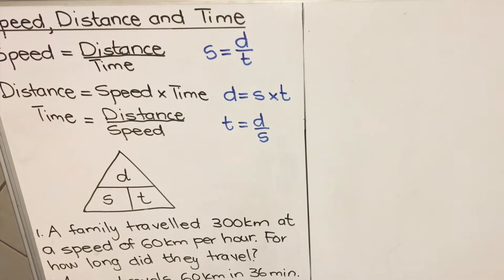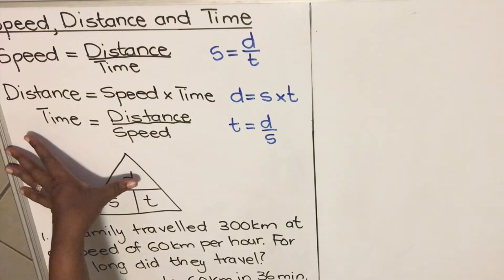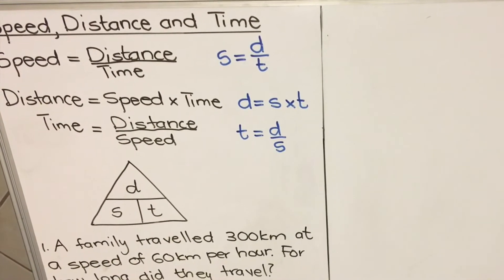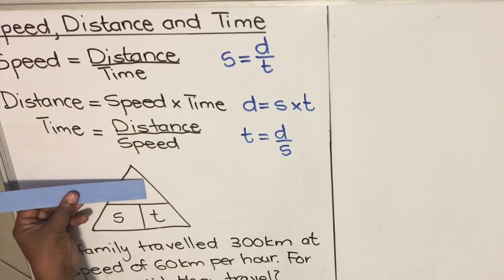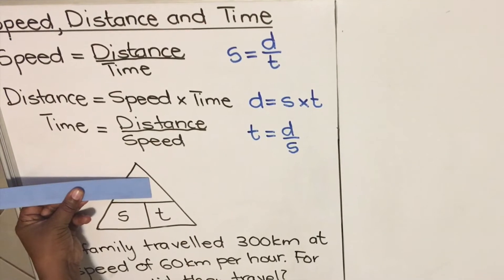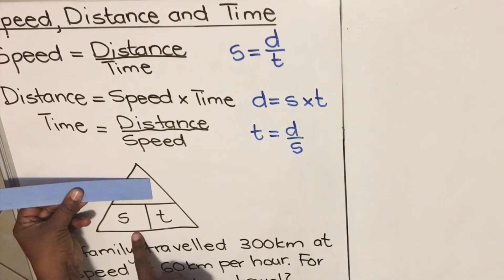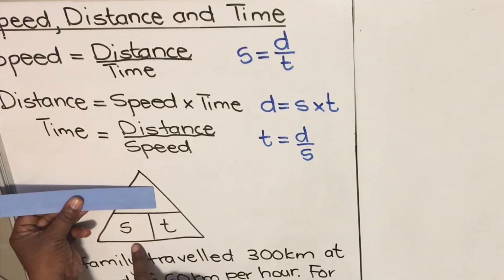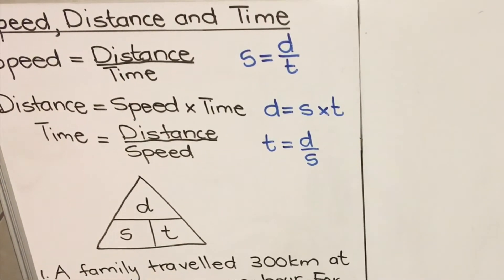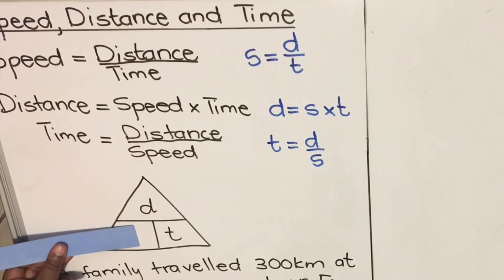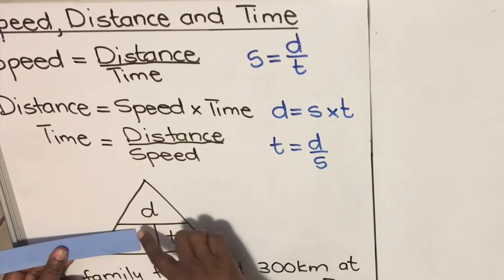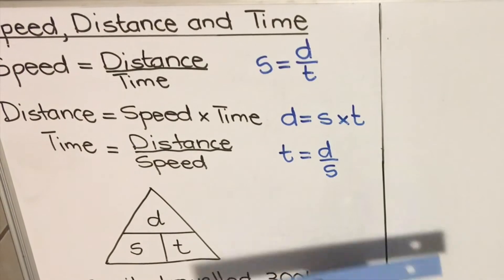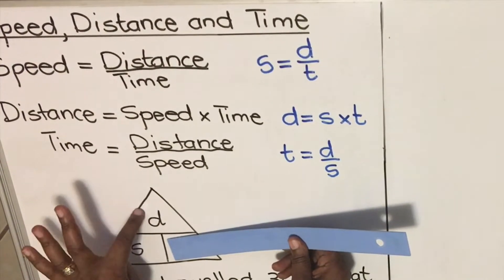How does it work? When you are calculating distance, you block the d and what's left tells you the formula. If I block the distance, I can see speed times time — so for distance, I multiply speed and time. If they ask you for speed, you block the s and you see distance over time, so speed = d/t. And for time, you block t and you see distance over speed, so t = d/s.